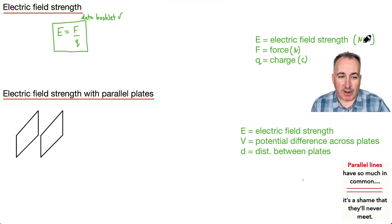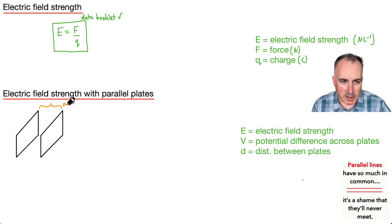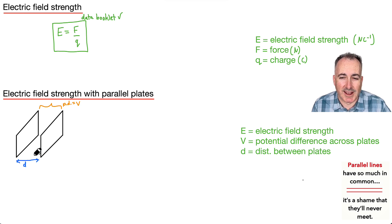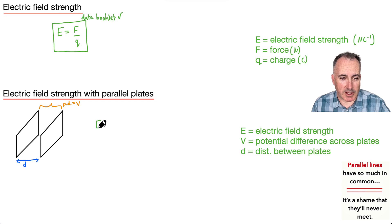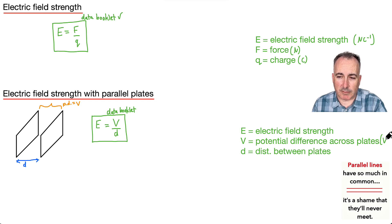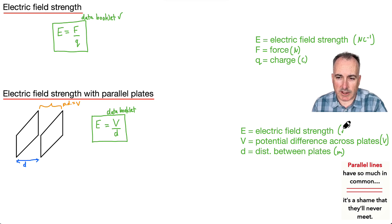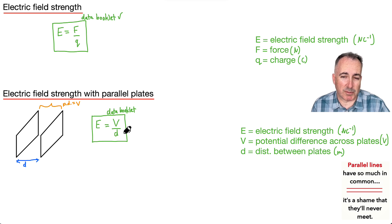What about parallel plates? If we have two pieces of metal with some potential difference across them — P.D. equals some voltage V — and we have the distance D between the two parallel plates, we have another equation. The electric field in between these parallel plates is just V over D — also in your data booklet. The potential difference is measured in volts, the distance in meters. So electric field strength is still Newtons per Coulomb, but there are alternate units: you could also say it's Volts per meter. The accepted unit is Newtons per Coulomb.